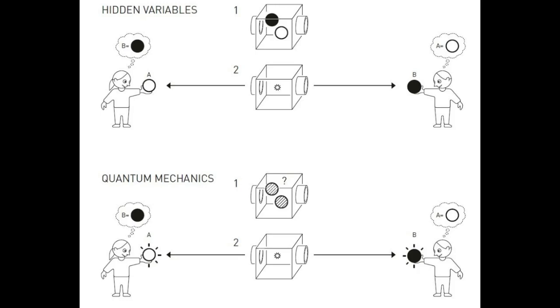But how is it possible to know that the balls did not each have a set color at the beginning? Even if they appeared gray, perhaps they had a hidden label inside, saying which color they should turn when someone looks at them.